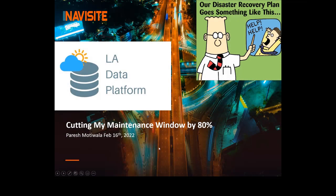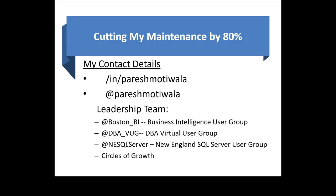My name is Paresh, I'm from Boston. Yes, there's only about five feet of snow on the ground here, but it's nice and cozy — a very pleasant zero degrees Celsius right now. These are my contact details: LinkedIn, Twitter, Facebook, Instagram, and Snapchat are all Paresh Motivella — you should be able to find me.